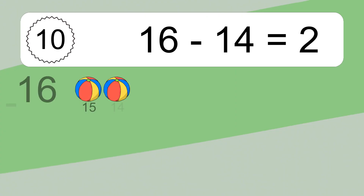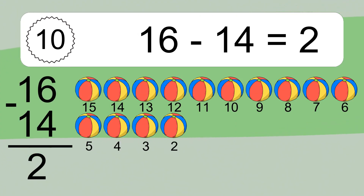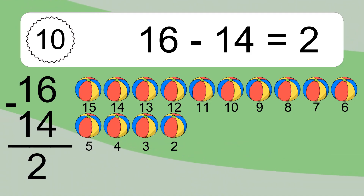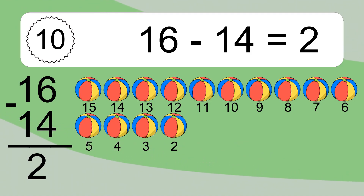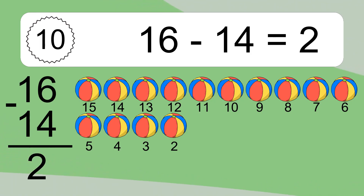16 minus 14 equals what? 16 minus 14 equals 2. Let's count it: 15, 14, 13, 12, 11, 10, 9, 8, 7, 6, 5, 4, 3, 2.